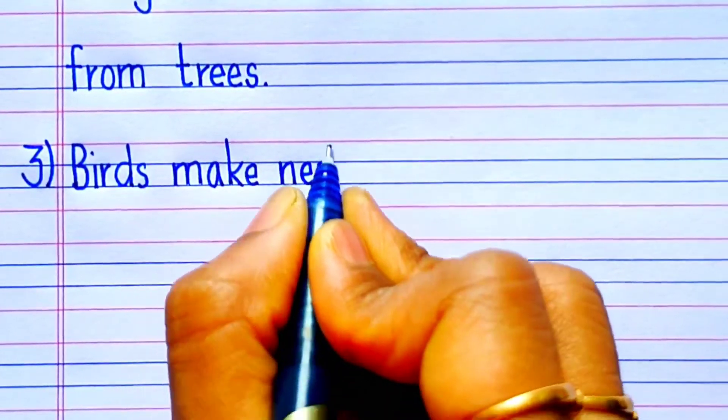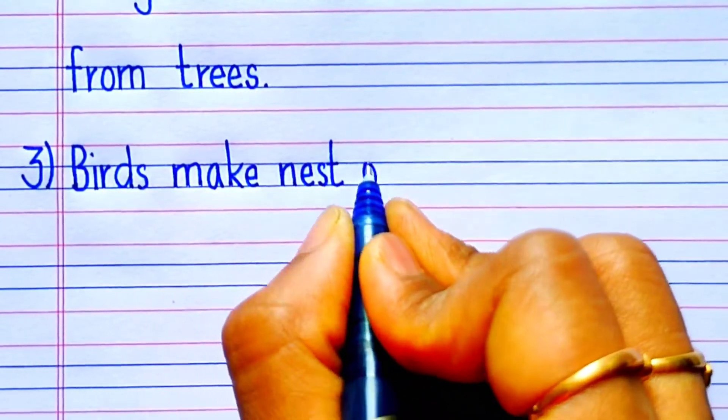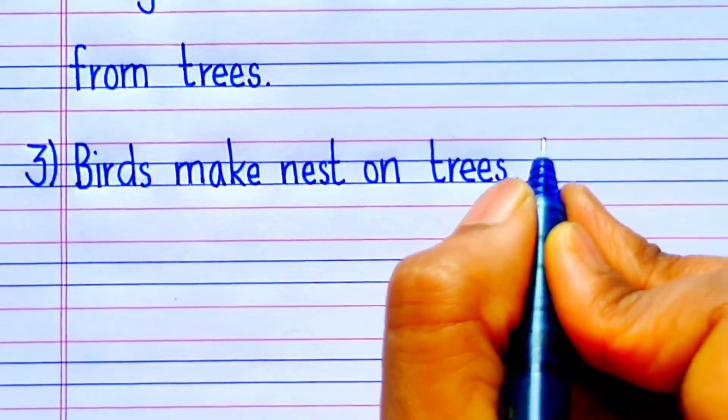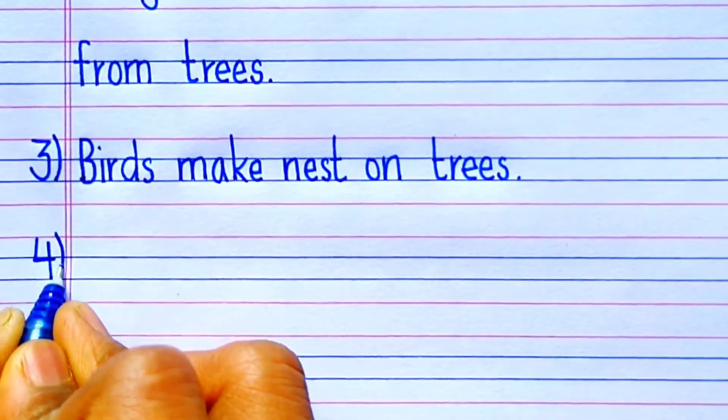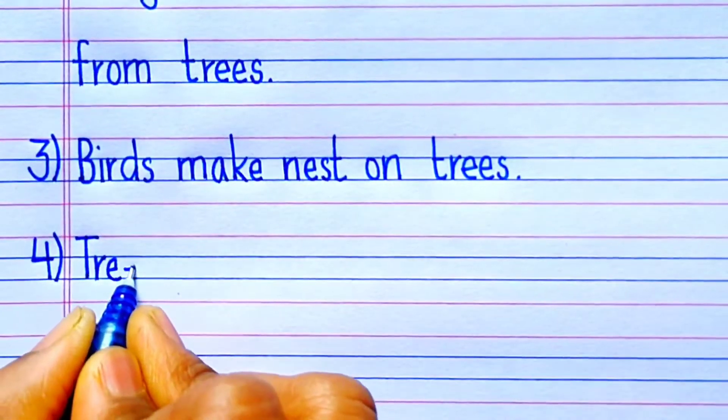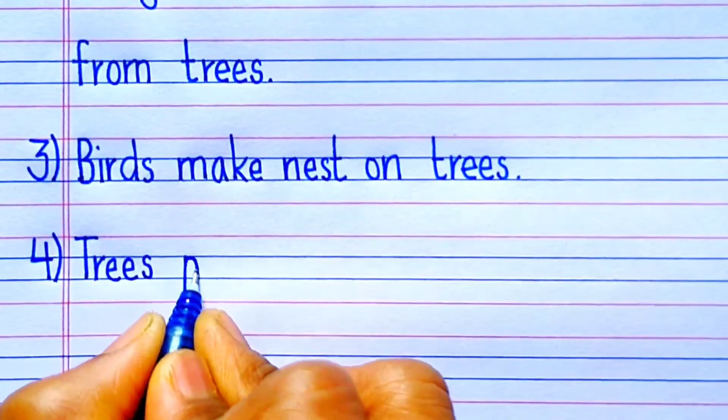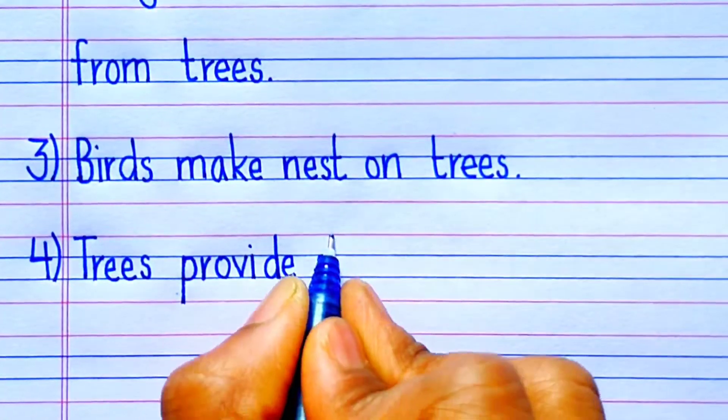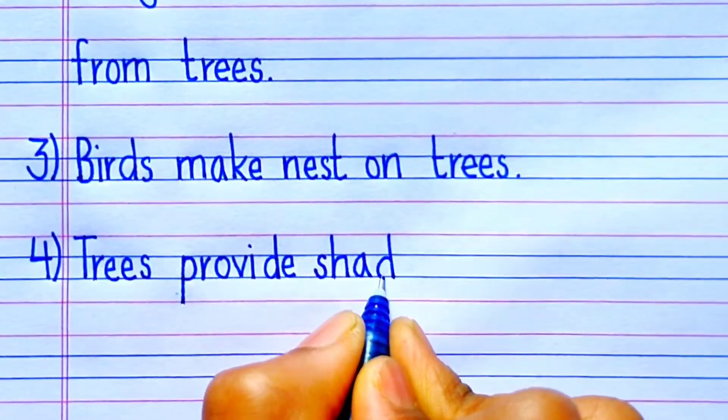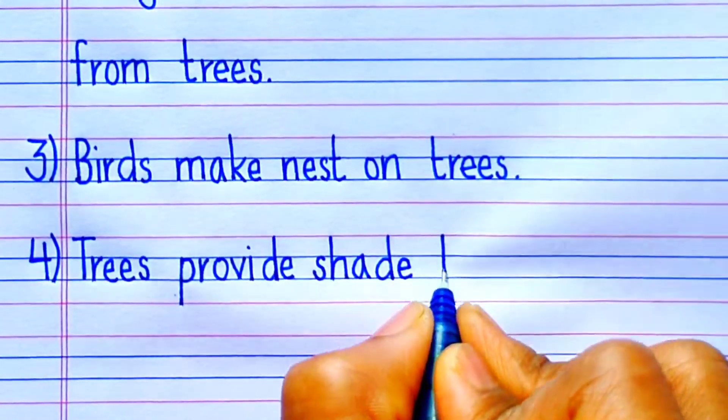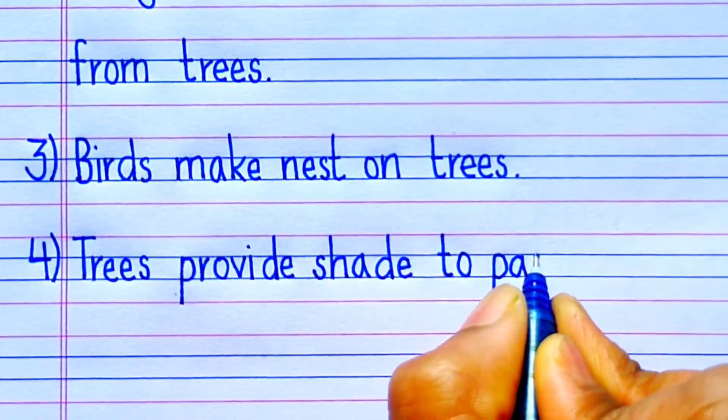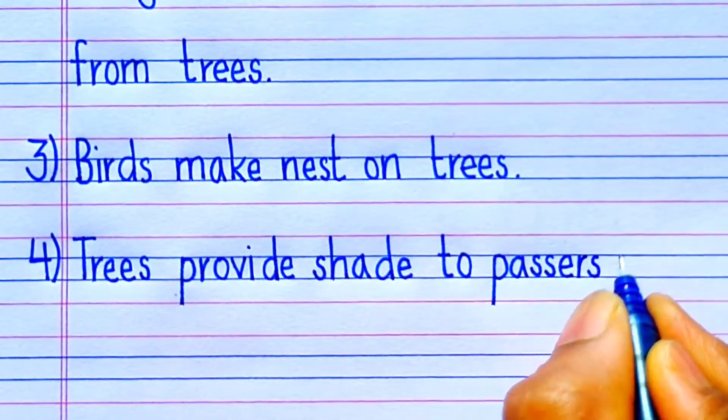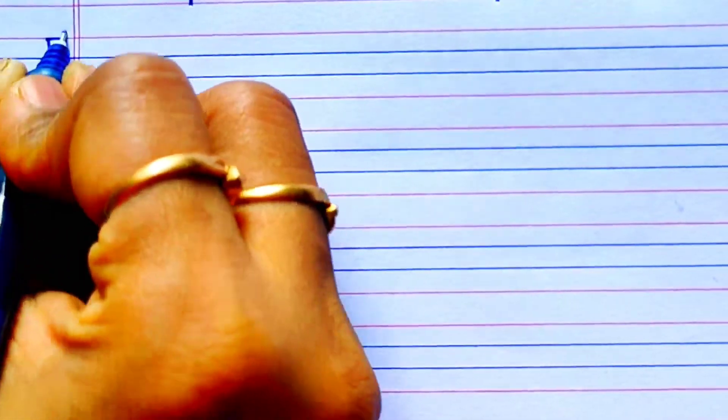The third sentence is: Birds make nests on trees. The fourth sentence is: Trees provide shade to passersby.